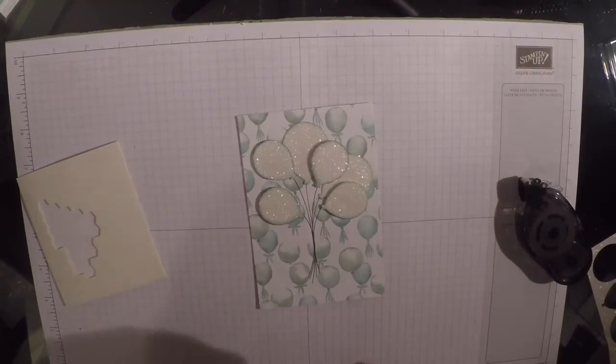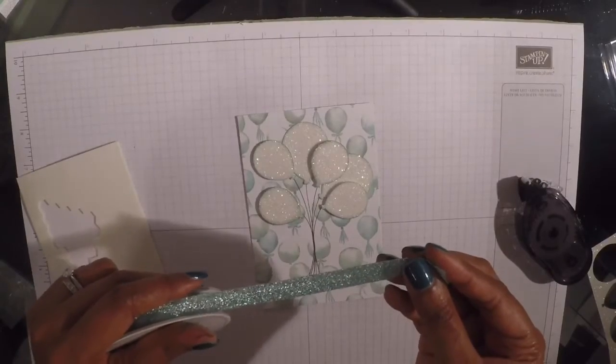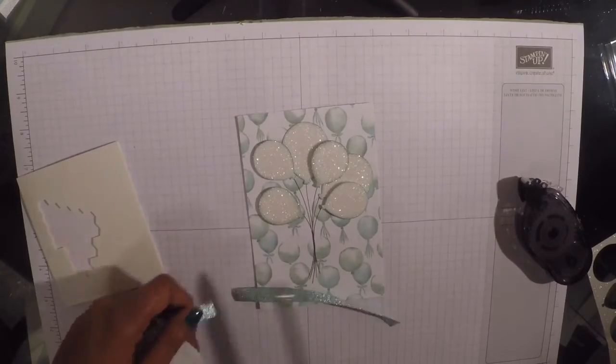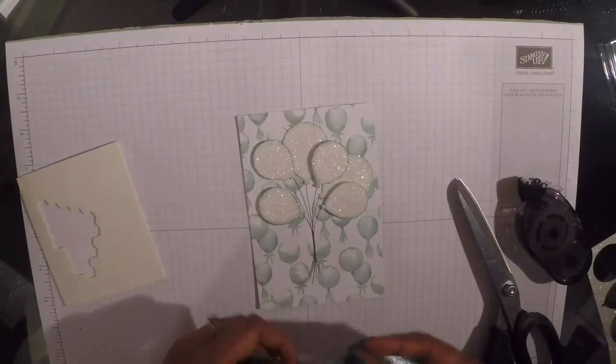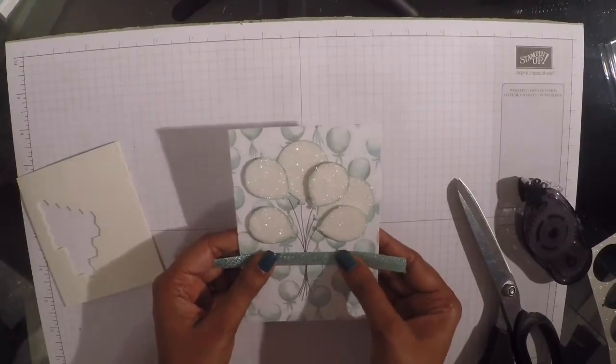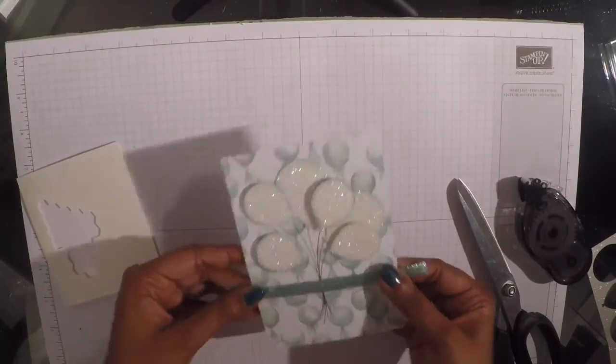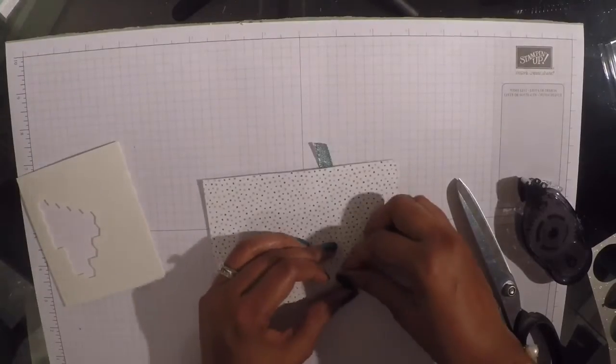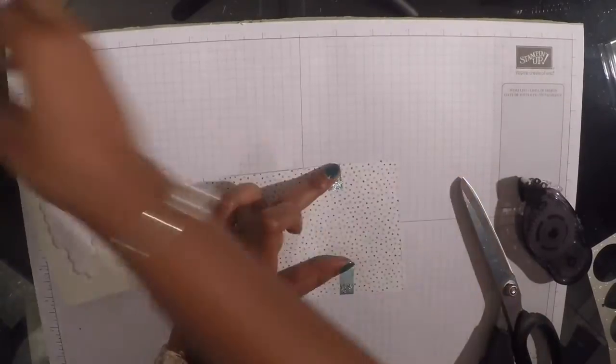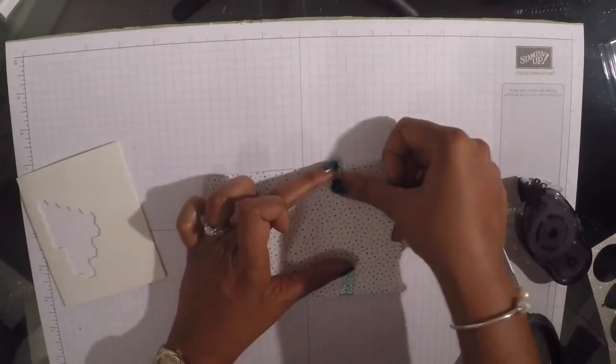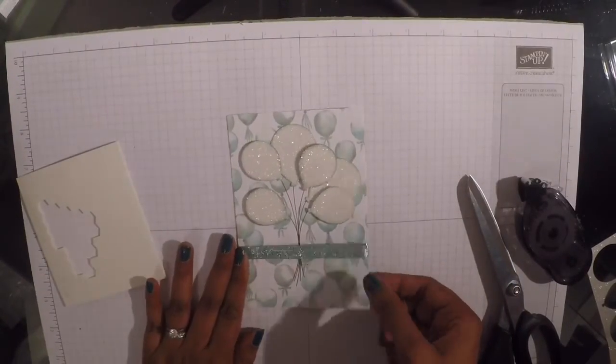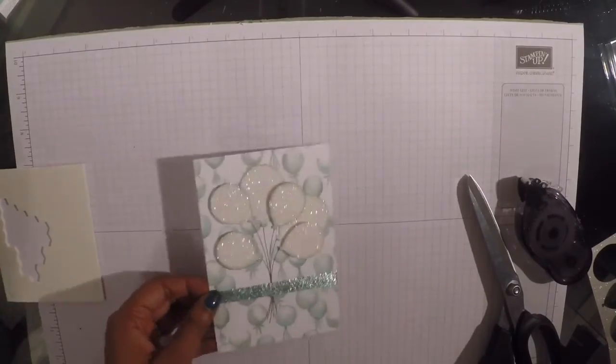And then I'm going to take this gorgeous Pool Party ribbon. This is also retiring, very sadly, and won't be in the new catalogue. So if you can get it now, don't miss out. And I'm going to loop that around where the tie would be on the strings. And as you know, I always like to attach my ribbon with Scotch tape.